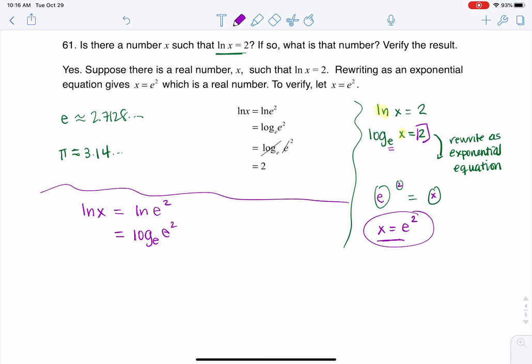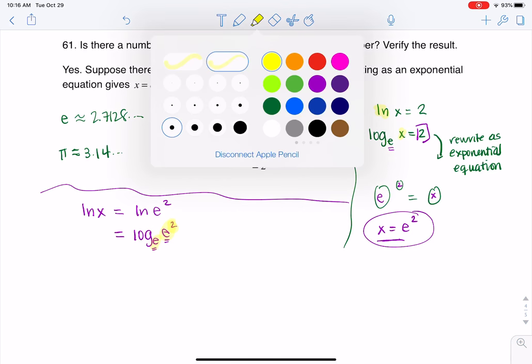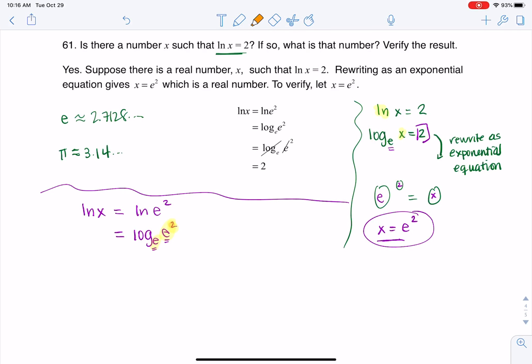And we've talked about when the base of your logarithm and the base of your power are the same, the only thing that survives is this exponent. Because quite literally, how do I get from e to e squared using nothing but exponents? Well, I need an exponent of 2. So this whole thing simplifies to 2. And so I've verified it.